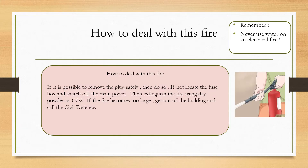How can we deal with an electrical fire? If it's possible to remove the plug safely, then do so. If not, locate the fuse box and switch off the main power, then extinguish the fire using dry powder or CO2. If the fire becomes too large, get out of the building and call the civil defense.